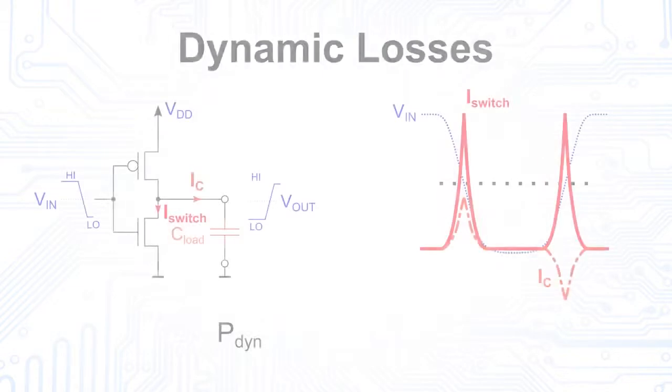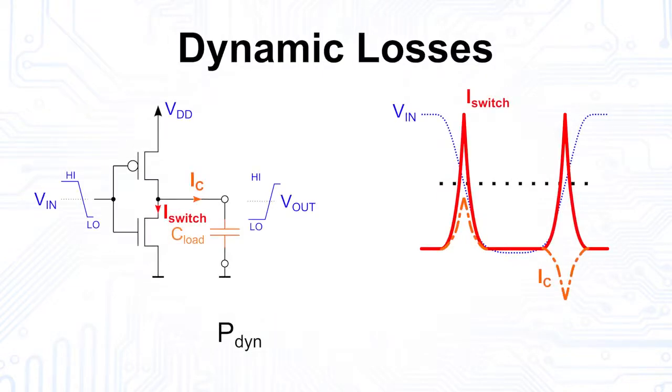In the last part of our first video on CMOS, we will deal with some inconveniences of CMOS circuits. As already mentioned at the beginning, CMOS circuits consume a lot of energy when switching. The resulting losses are called dynamic losses and are linearly dependent on the switching frequency, as well as the load capacitance, which is usually caused by the gate capacitance of the subsequent logic gates.